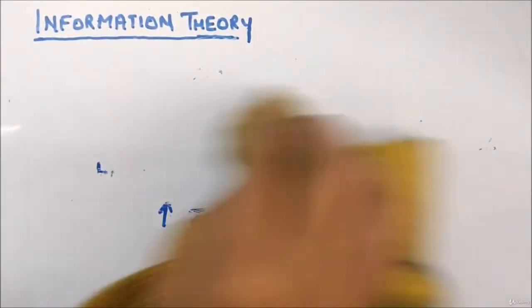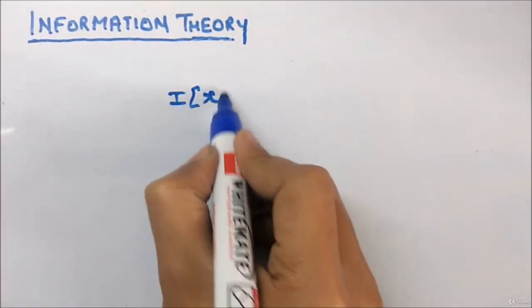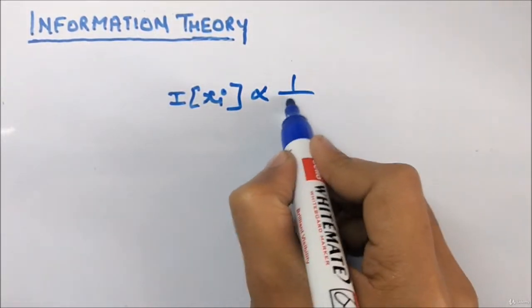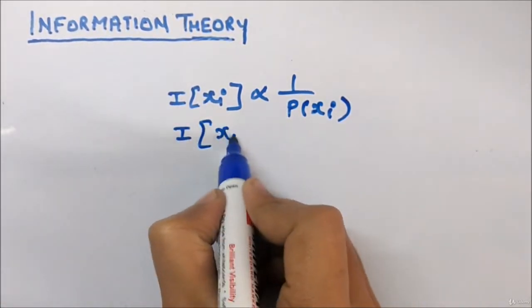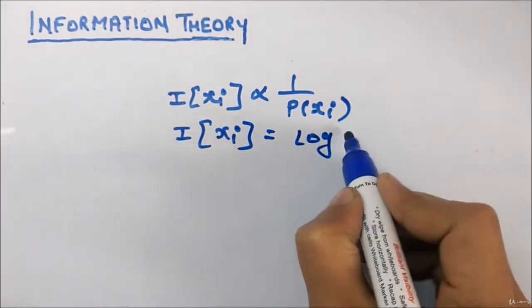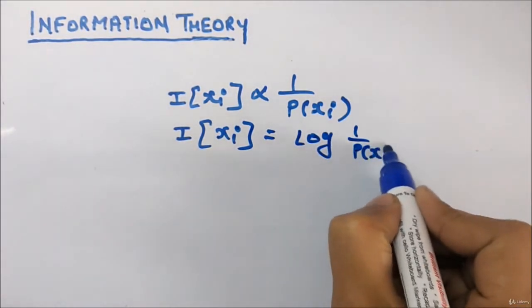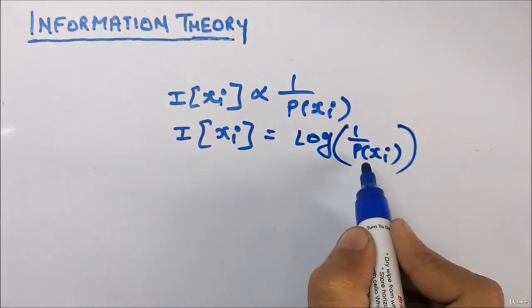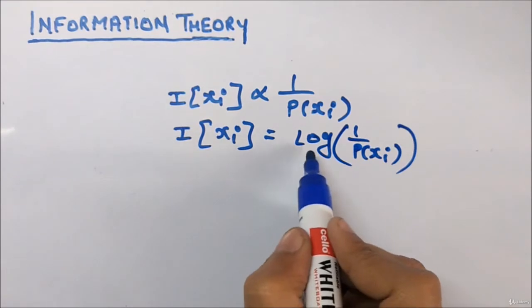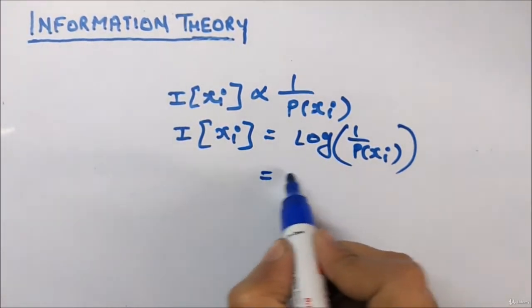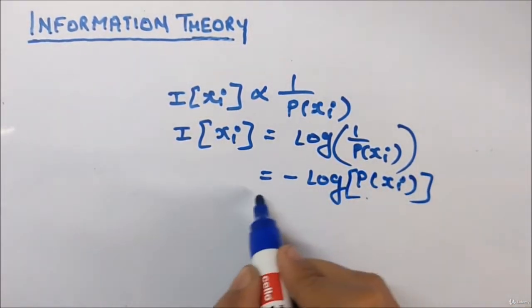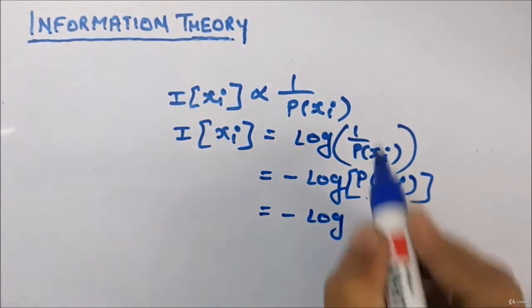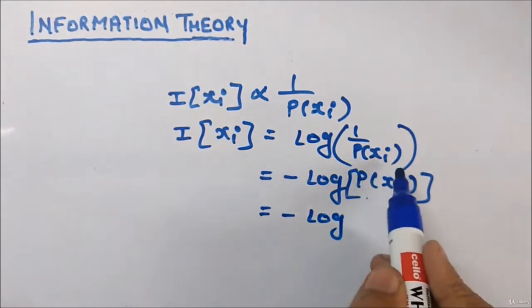So, I(xi) is inversely proportional to 1/P(xi). Removing the proportionality constant, we get I(xi) = log(1 / P(xi)). Applying the log a/b formula, this becomes minus log P(xi).